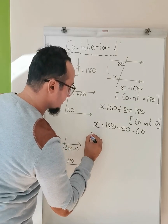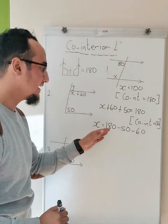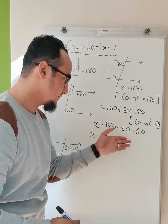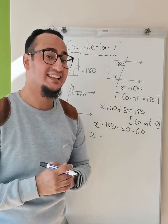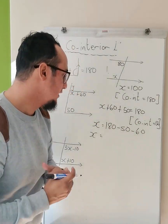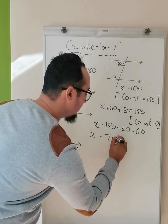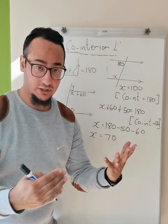180 minus 50, which is equal to 130. 130 minus 60 would be equal to 70 degrees. So now let's double check our answer: 70 + 60 + 50 should be equal to 180 degrees.